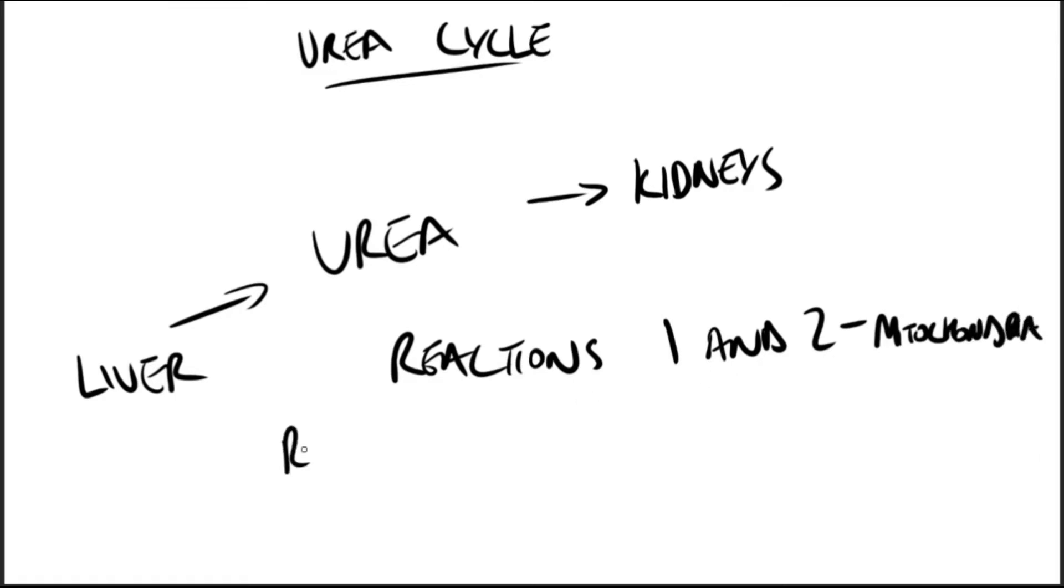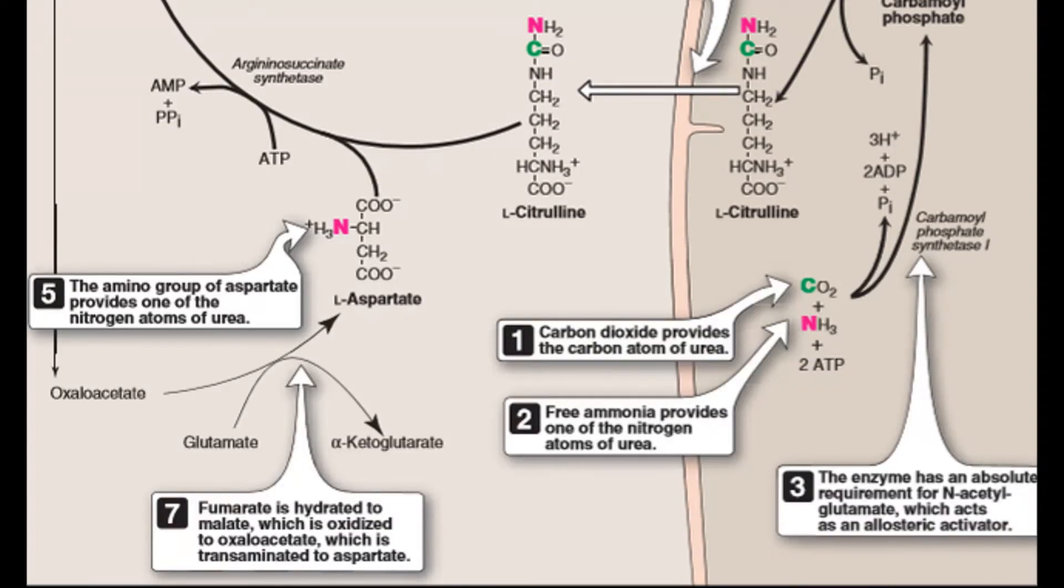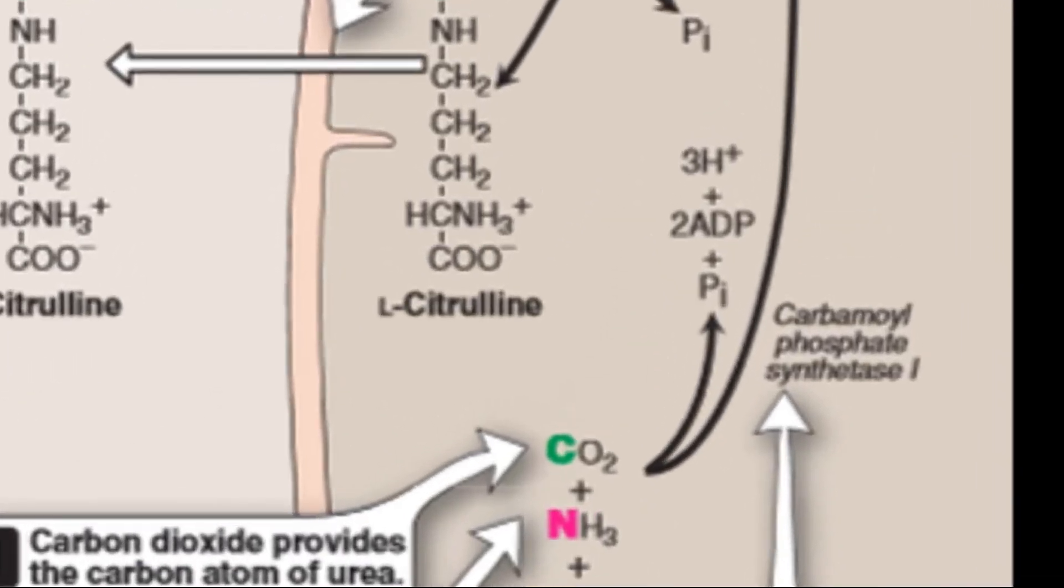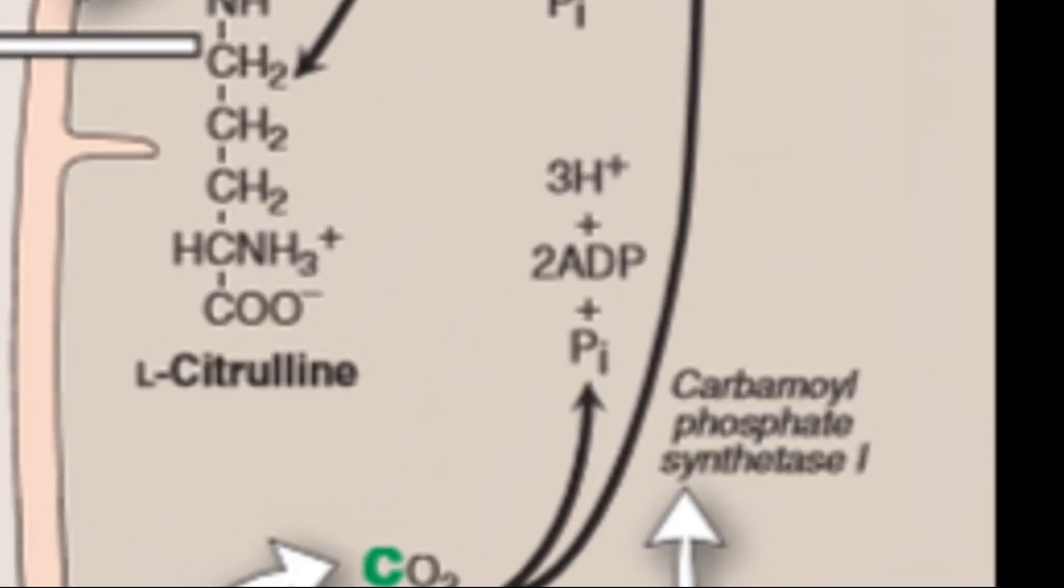And here I'm speaking about the urea cycle. So first, we have the formation of carbamoyl phosphate by carbamoyl phosphate synthetase one. It's an important enzyme, driven by cleavage of two molecules of ATP.